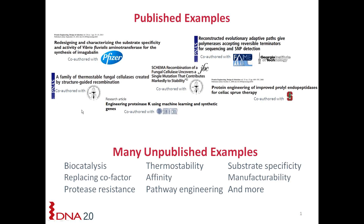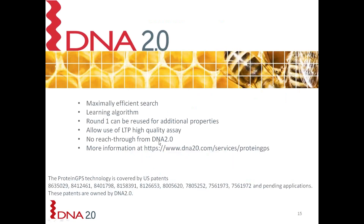Above here are published examples using this technology. Most projects are unpublished because they're carried by industrial or commercial entities. We apply this to biocatalysis, thermal stability, manufacturability, and many other properties. The search is based on maximally efficient search technology — a learning algorithm that lets us learn the space and drill down as far as we want. Round zero goes in one day and can be assessed across as many different properties as you want, serving as a map of your space.